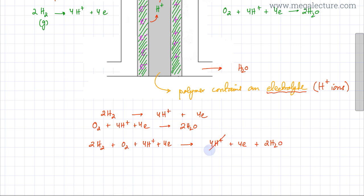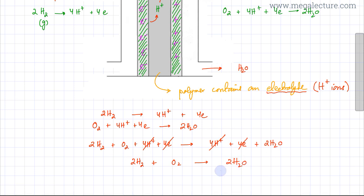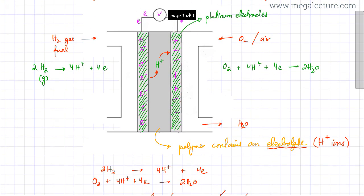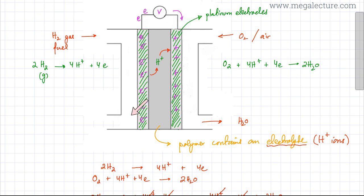Simplifying the equation, the 4H⁺ on both sides cancel out, and the 4 electrons on both sides cancel out. So the overall reaction is: 2H₂ + O₂ → 2H₂O. Water is the only by-product of this reaction. Nothing else is produced at the left-hand chamber — hydrogen comes in, produces H⁺ ions that go into the electrolyte, and any unused hydrogen gas exits. The only by-product coming out is water.